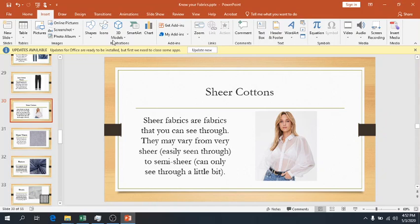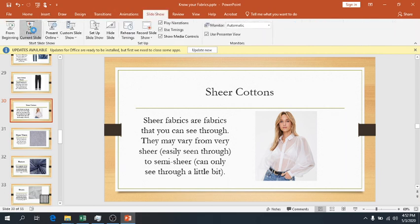Just wanted to let you know about that before we start today's lesson. We left off about in the middle of our cotton fabric, so I want to pick up and cover the category of sheer cottons next. Sheer fabrics are fabrics that you can see through — not completely transparent, but easily seen through. These fabrics can vary from being very sheer to semi-sheer.